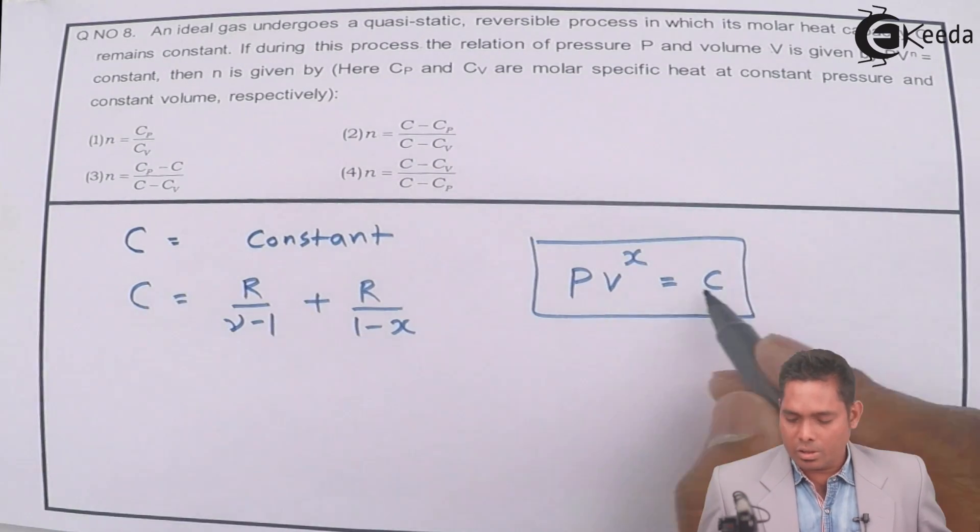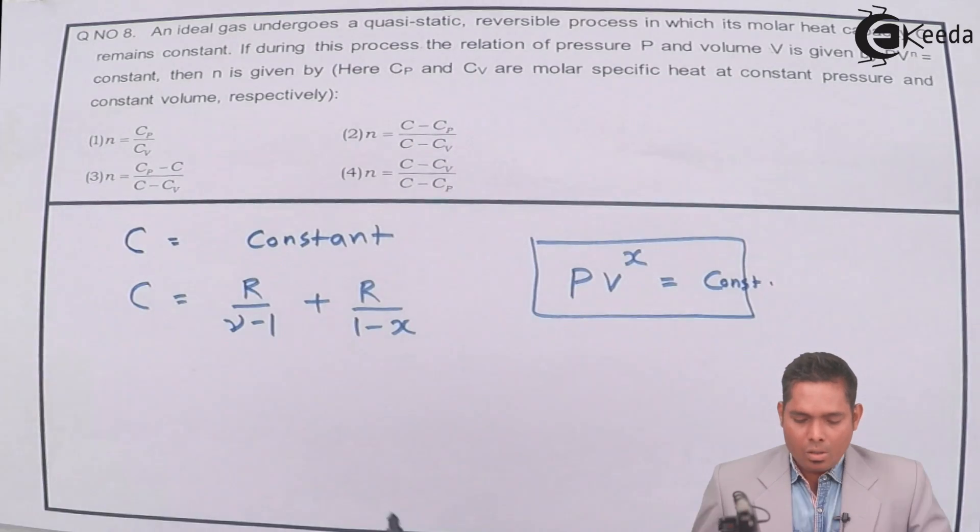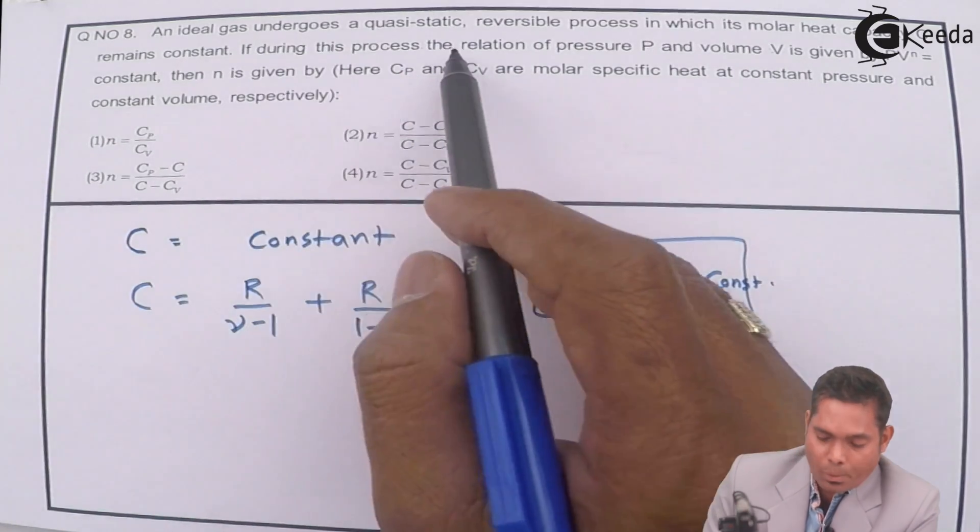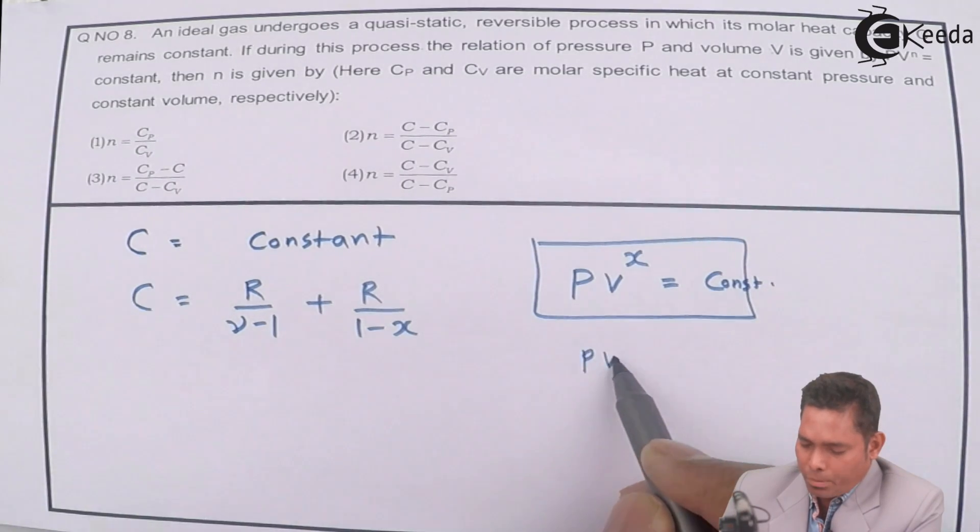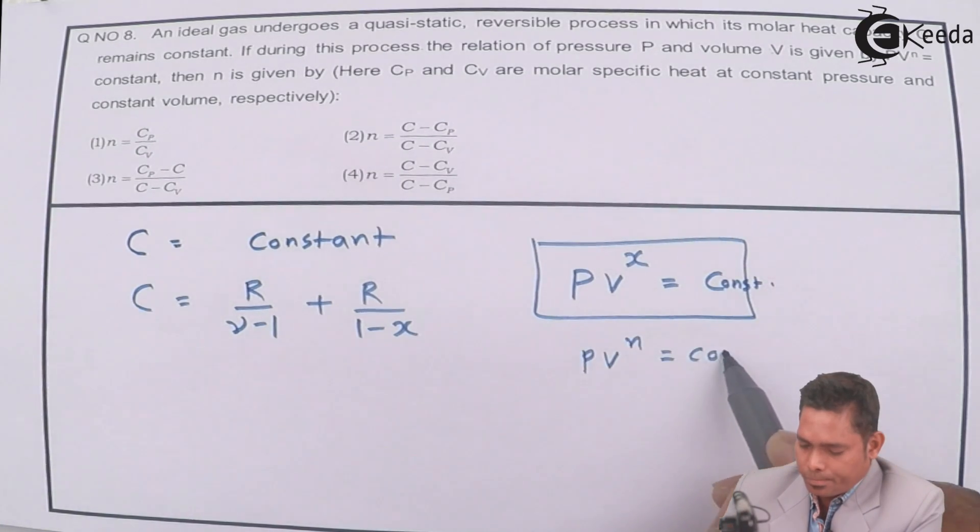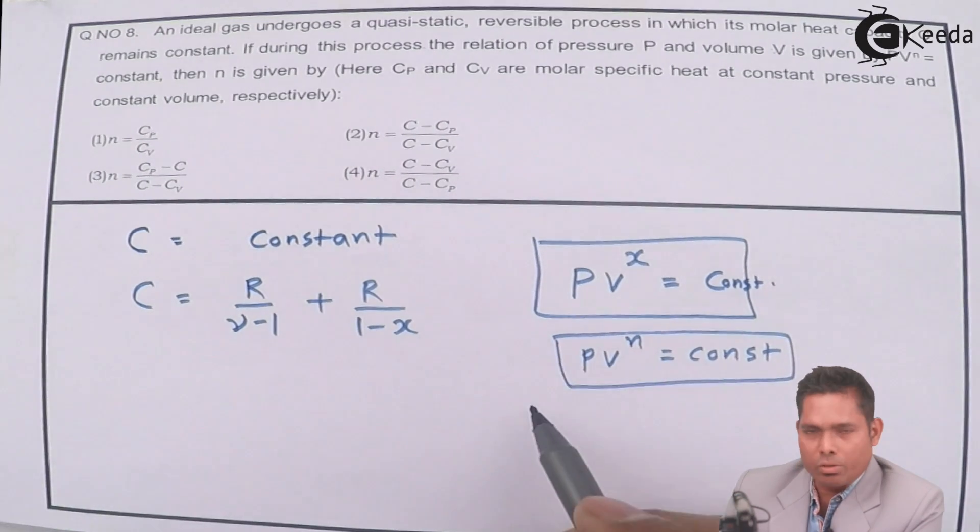This is not this C. This is any constant, say constant. During this process, the relation of pressure and volume is given by, in the question is given by PV raised to N is constant. This is the equation.